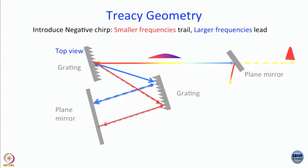Either your stretcher will be very big, which you do not want, or you have to do multiple passes so that the effective path travel is much more. That leads us to little more complicated geometries. This geometry is called Treacy geometry.